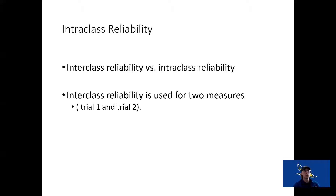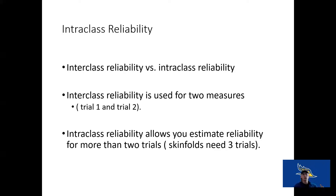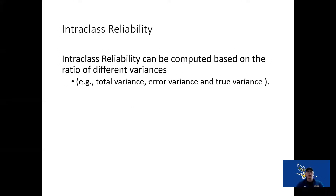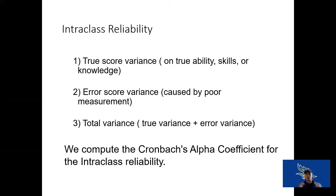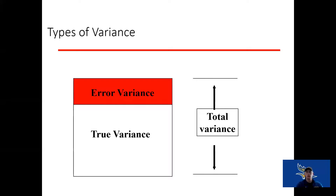Now we'll go into intra-class reliability — looking at the reliability of more than two trials or multiple trials. Think back to our ANOVA. It allows us to estimate reliability for more than two trials: three, four, or five trials. Are we reliable over time across multiple measurements? We do this by looking at the variance of scores. This is an ANOVA-based calculation where we compute the ratio of different variances, examining how each variance is causing differences within the scores. A test with very large variance is not going to be very reliable, while one with very small variance will be.